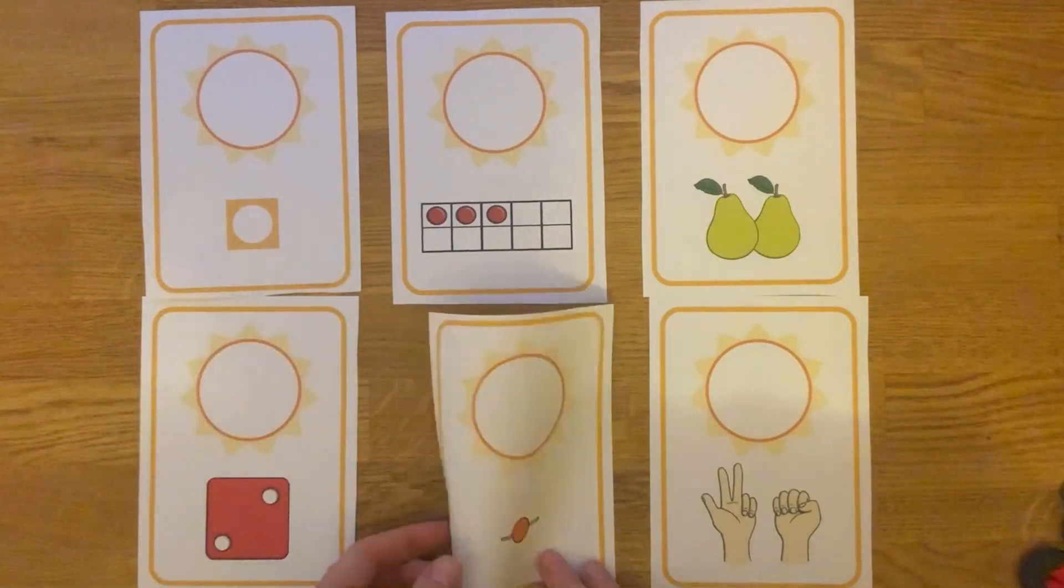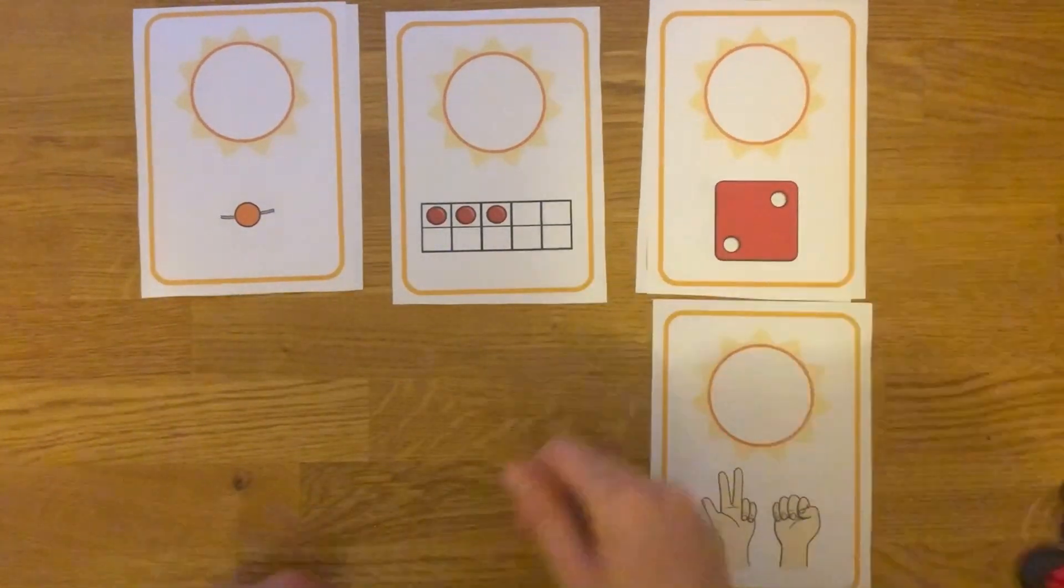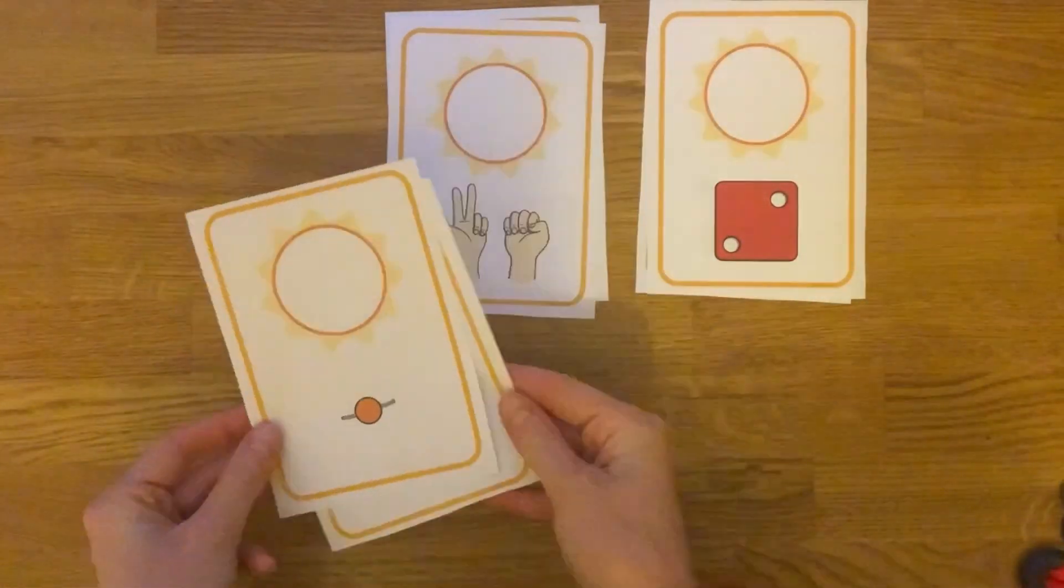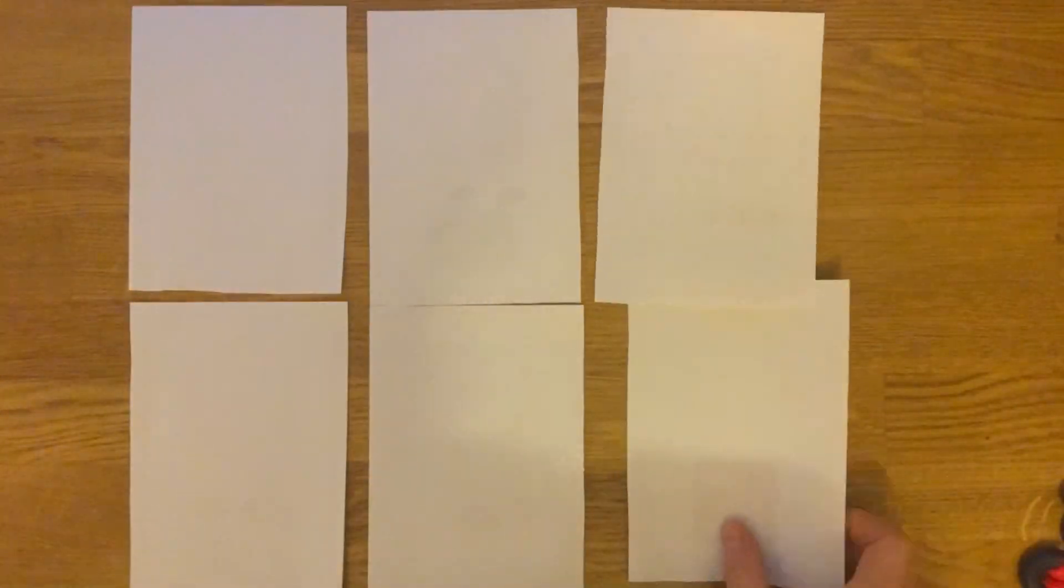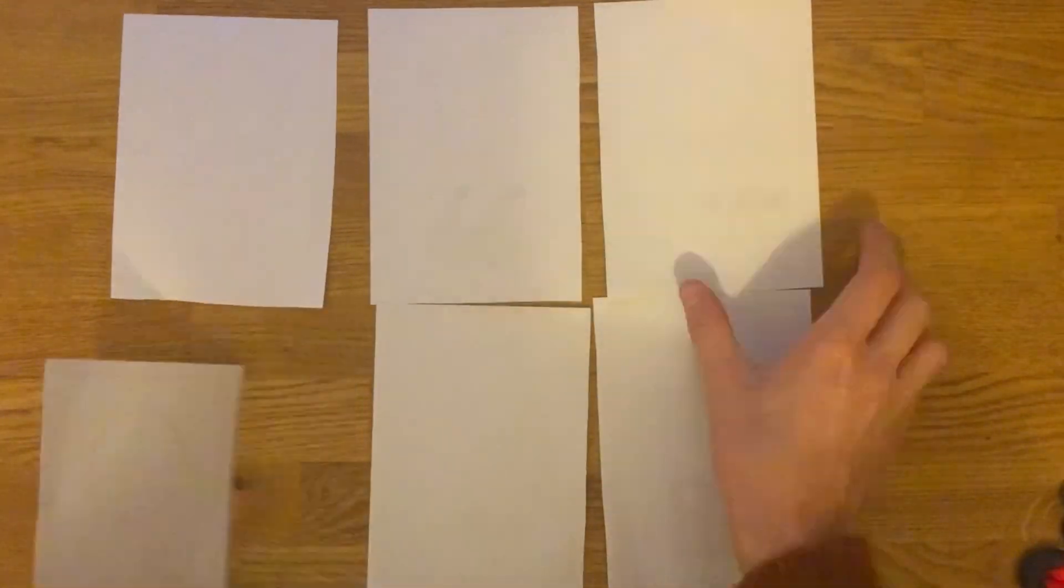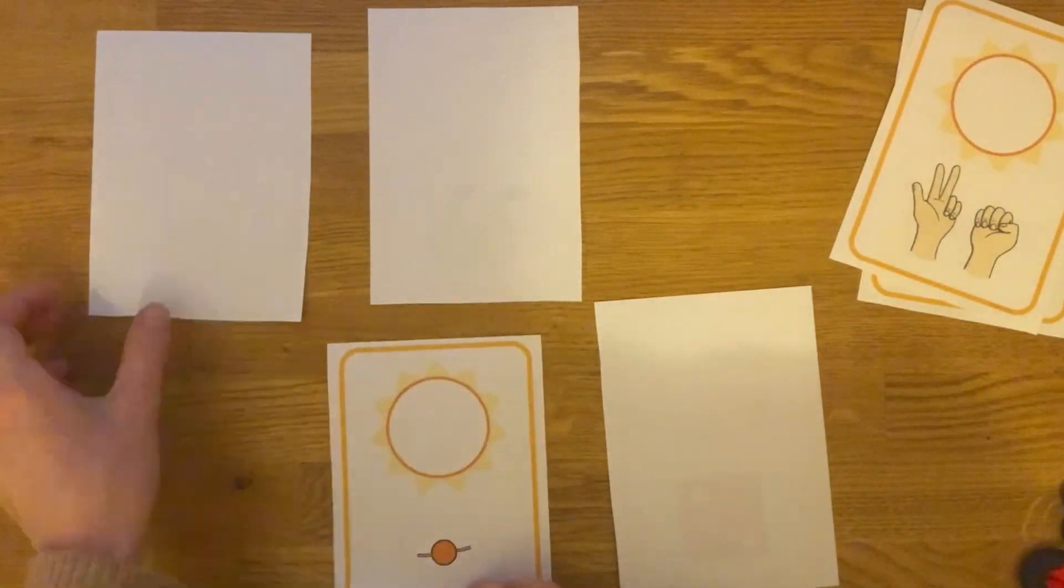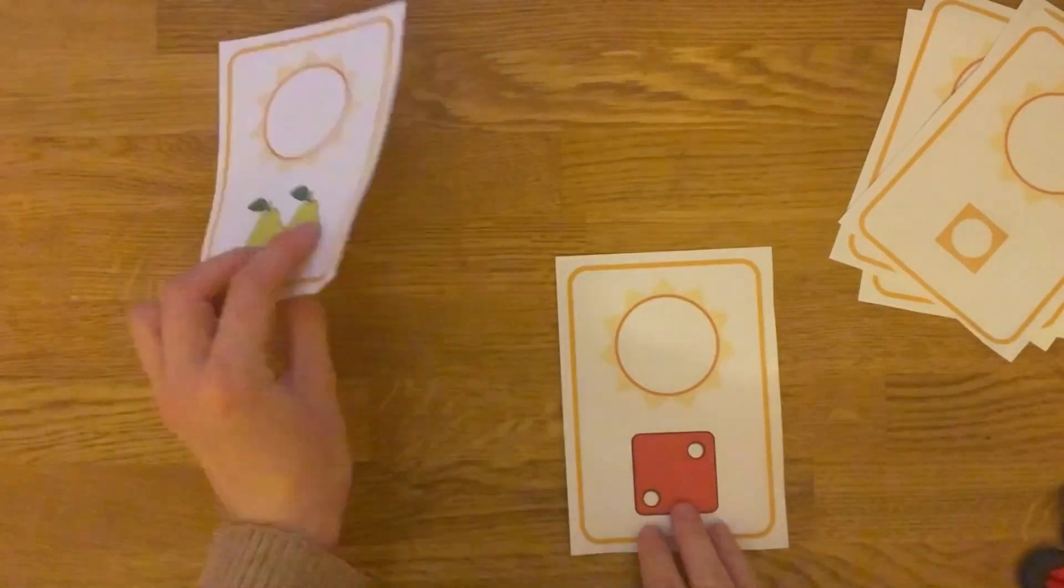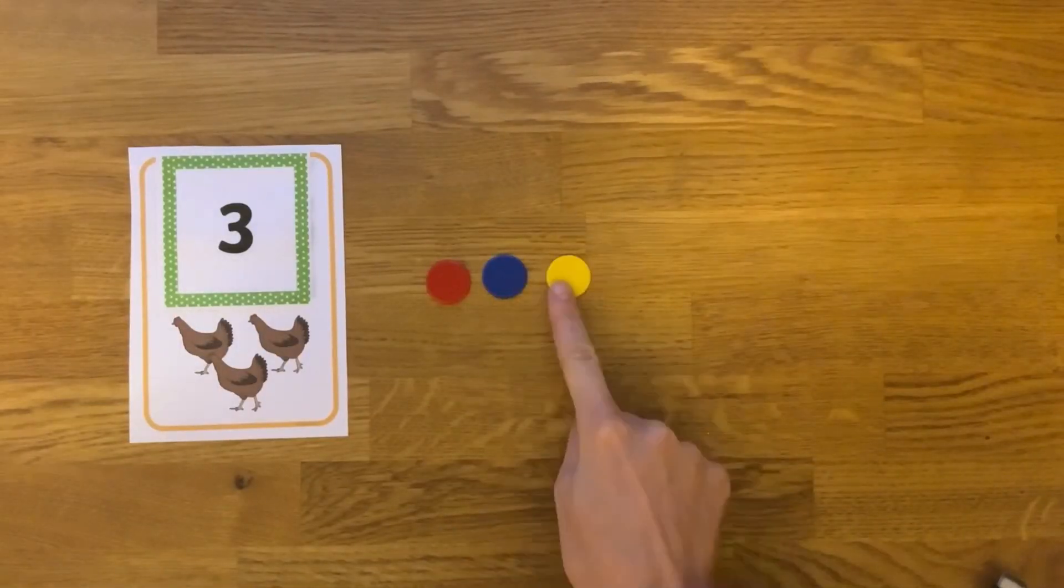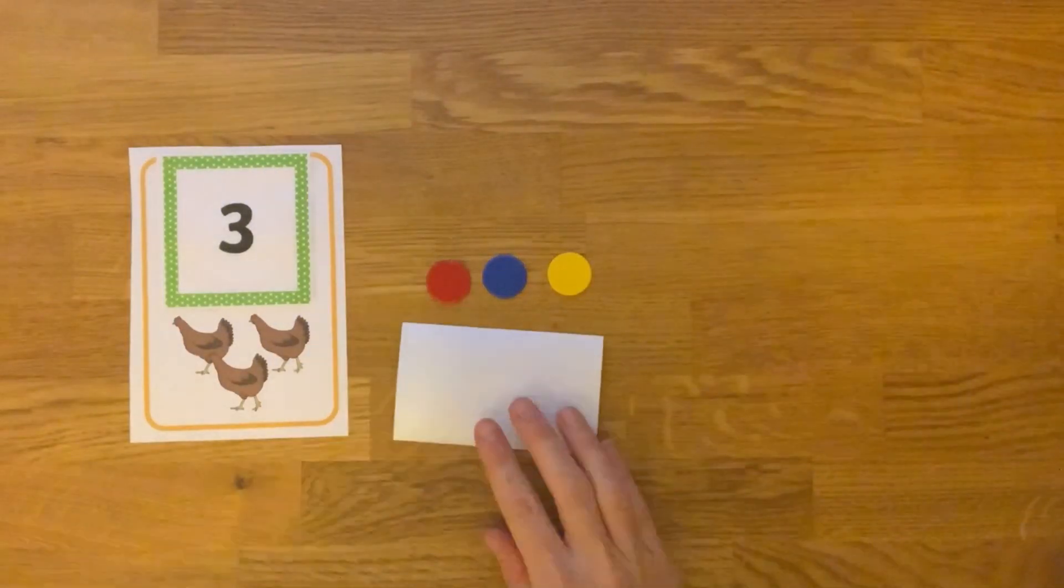Can children match up the cards according to the numbers shown in the picture? As an extra challenge, this could be set up as a memory game. How many different ways can children represent a number?